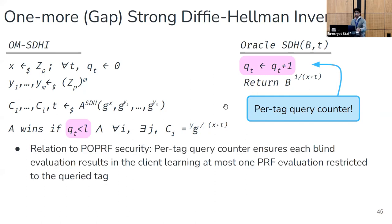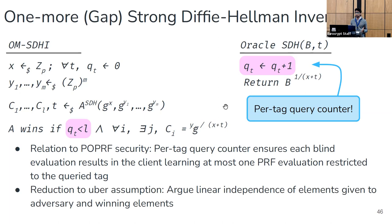Intuitively, this assumption captures what we want out of the POPRF security: a query to the blind evaluation oracle for a particular tag allows the client to learn exactly one PRF evaluation for that tag and not any other evaluations for any other tag. To prove hardness in the AGM reduction to the uber assumption, we need to argue that at least one of the winning c elements that the adversary produces is linearly independent from all other elements the adversary has received from the SDH oracle. To do this, we need to reason about the types of elements the adversary can get from the oracle. It's easy for the adversary to compute q SDH elements from q queries for tag t, but we need to argue that making queries to other tags doesn't help the adversary compute another winning element for tag t.